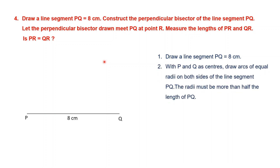With P and Q as centers — listen carefully — whenever you draw a perpendicular bisector the radii must be more than half the length of PQ. The line is 8 centimeters, half of 8 is 4, so the radius you take must be more than 4. Take 5 centimeters on your compass. Place the needle on P, draw an arc on top and one at the bottom, then keep the needle at Q and cut those arcs.